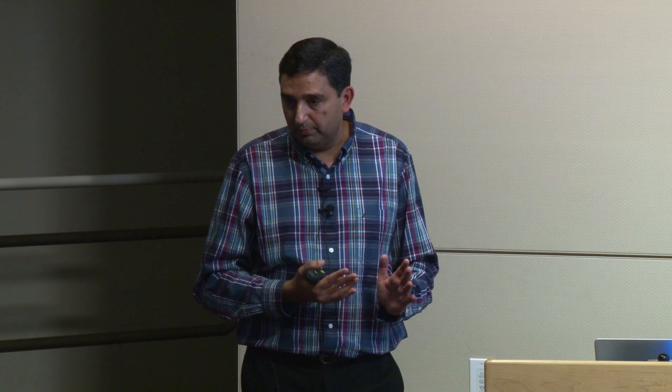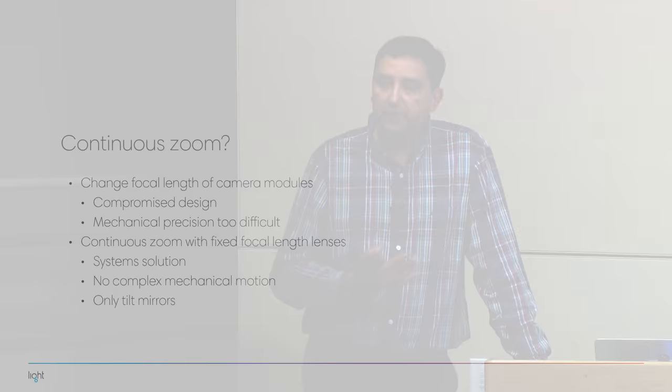We have fixed focal length modules, but we want to offer people continuous zoom ability, not just discrete fields of view. How do conventional cameras accomplish this? Zoom lenses physically move lens elements with respect to each other when you rotate the zoom ring to change focal length. We looked at that and decided it would not work for our system — the modules are too small and the precision required to change focal length would simply not be attainable. So we abandoned that approach in favor of a more systems-based approach to accomplish continuous zooming.